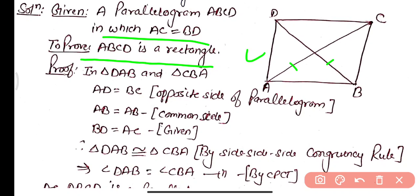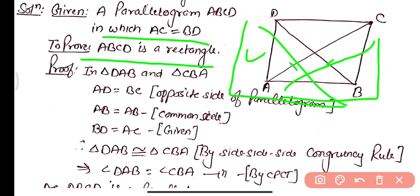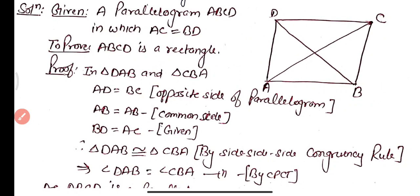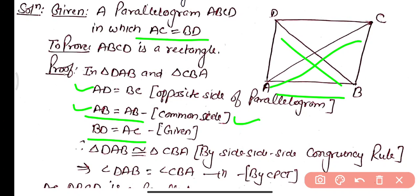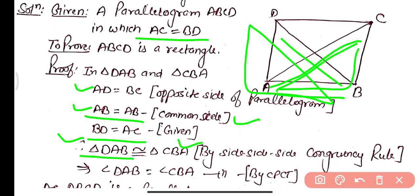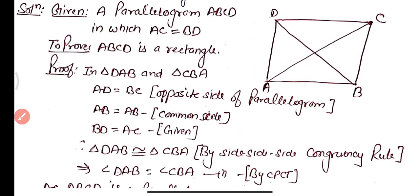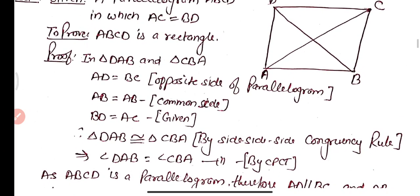In triangle DAB and triangle CBA: AD equals BC as these are opposite sides of the parallelogram, AB equals AB as it is the common side, and BD equals AC as given that the diagonals are equal. Therefore triangle DAB is congruent to triangle CBA by the Side-Side-Side congruency rule.